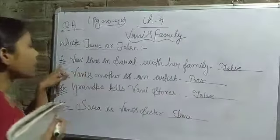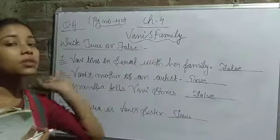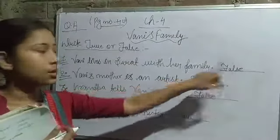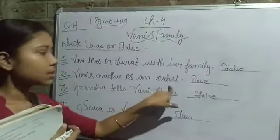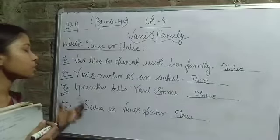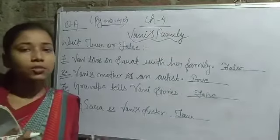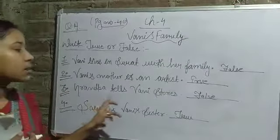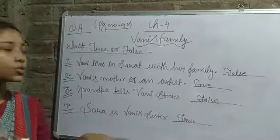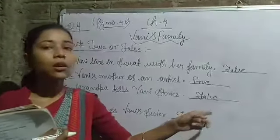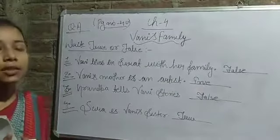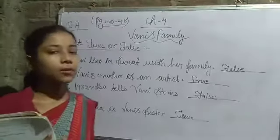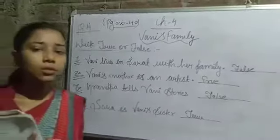So to recap: True means Sahi, False means Galat. 'Vani lives in Surat with her family' — False, because Vani lives in Agra. 'Vani's mother is an artist' — True, because Vani's mother is a painter in the story. 'Grandpa tells Vaani stories' — False, because Grandma always tells Vaani stories. 'Sarah is Vaani's sister' — True, because Sarah is Vaani's 3-year-old sister. This is question number A — you have to do this in your copy.